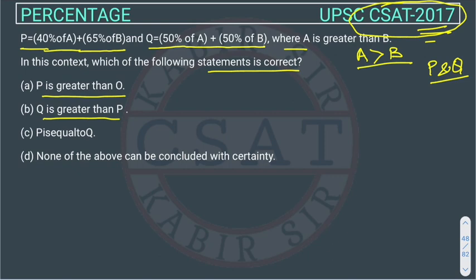Here we will use the trial and error method. From this we know that in P we are using 40% of A and in Q we are using 50% of A.